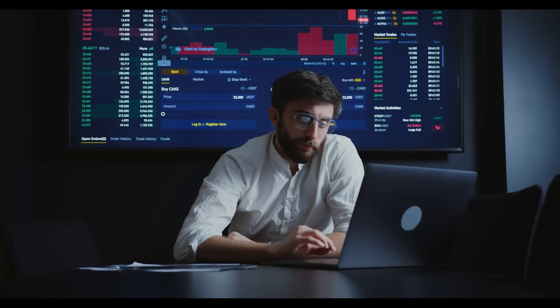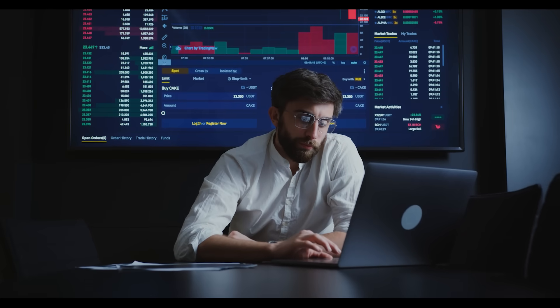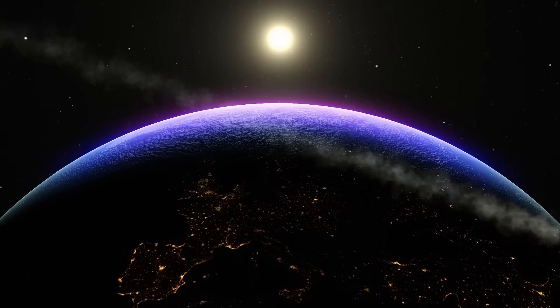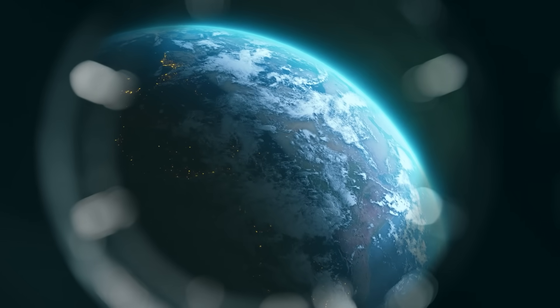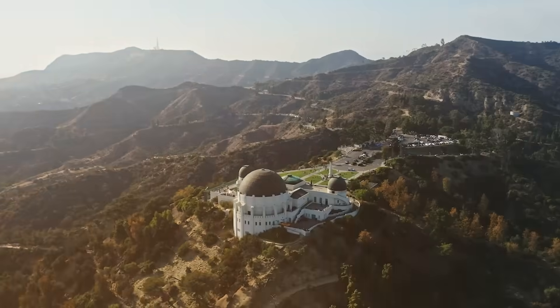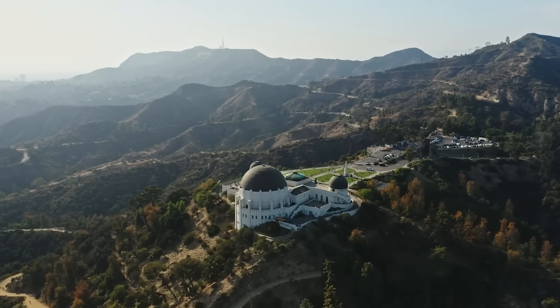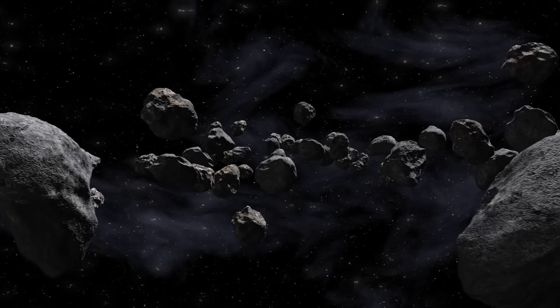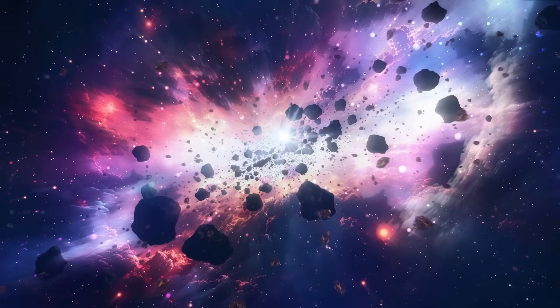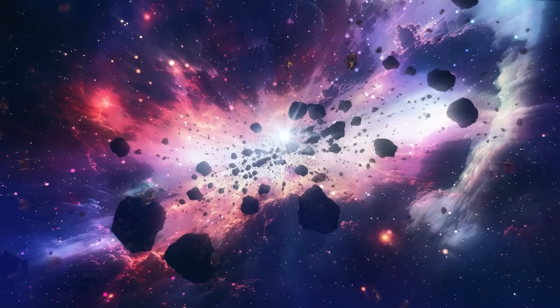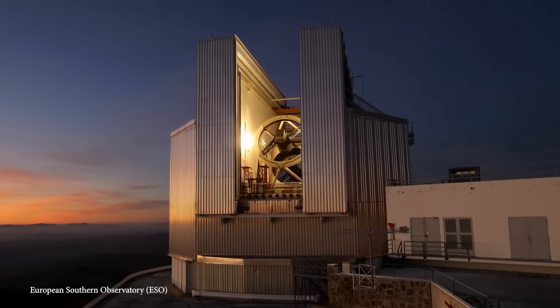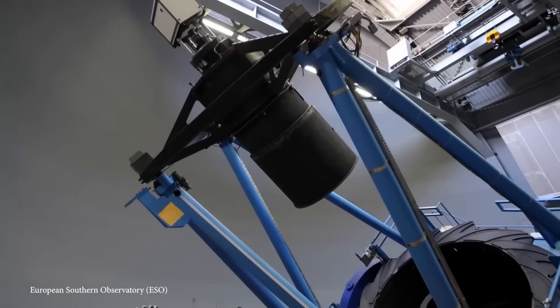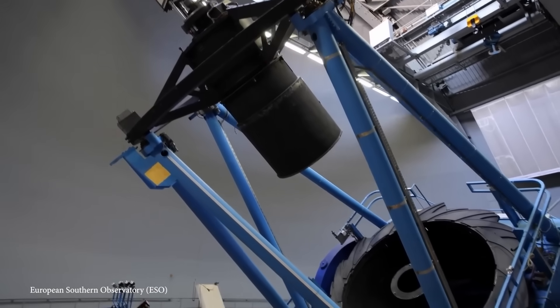The International Asteroid Warning Network, or IAWN, has one purpose: to detect and prepare for threats that could endanger life on Earth. It's a coalition of the world's most powerful observatories, from NASA and ESA to China's Purple Mountain Observatory. Until now, it has only ever monitored near-Earth asteroids, debris born within our own solar system. But in late October 2025, the IAWN made a stunning announcement. For the first time ever, it would begin tracking an interstellar object, 3I Atlas.